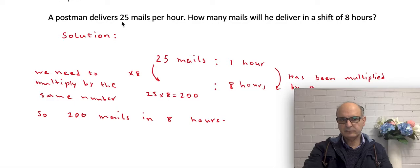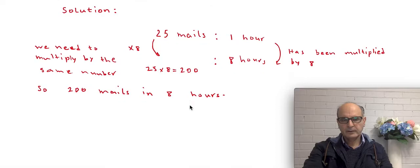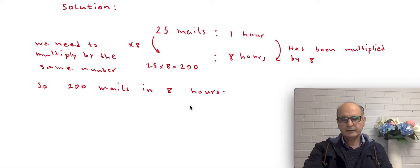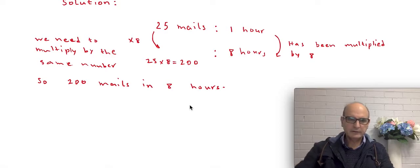So we times that 25, the rate, by 8, which was the second quantity. And we arrive at 200. That is how we find the total value from the rates. So I can write it here.